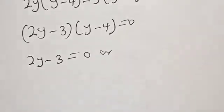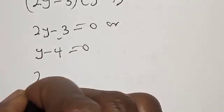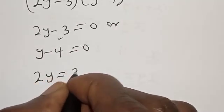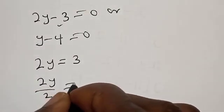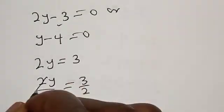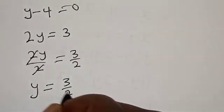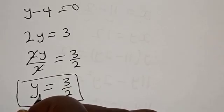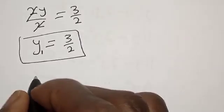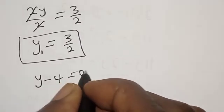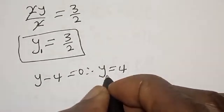So we have 2y minus 3 into y minus 4 is equal to 0. Therefore, 2y minus 3 equals 0 or y minus 4 equals 0. From 2y equals 3, dividing both sides by 2, y equals 3 over 2. Let's call this y₁. From y minus 4 equals 0, y equals 4. Let's call this y₂.